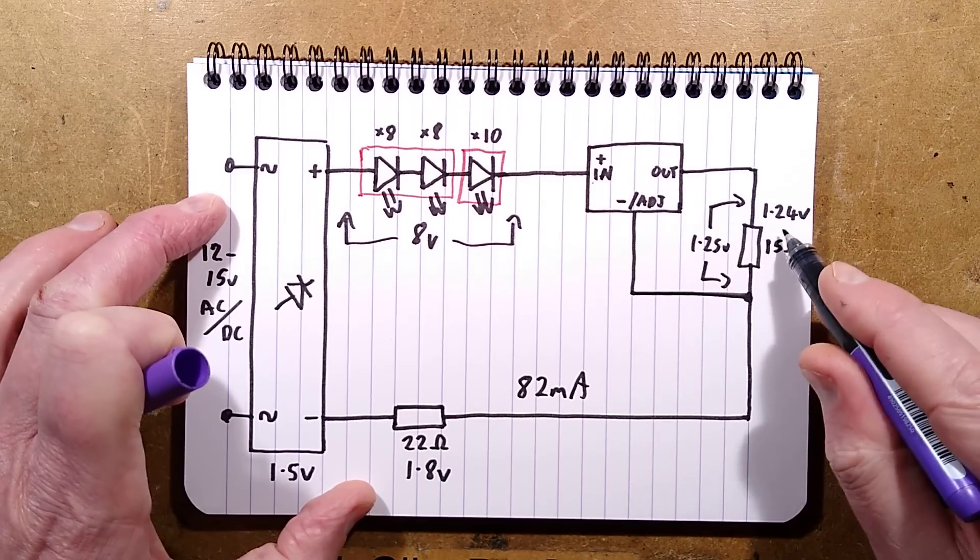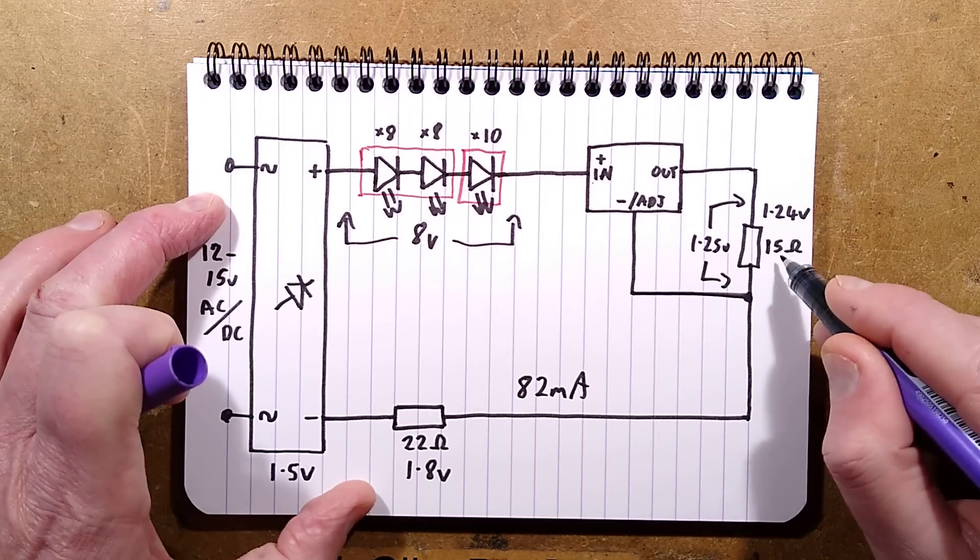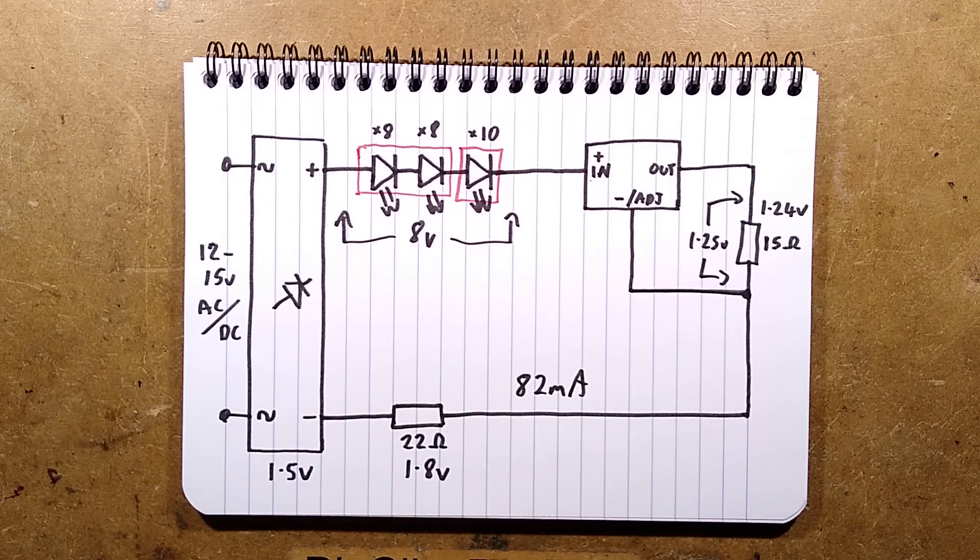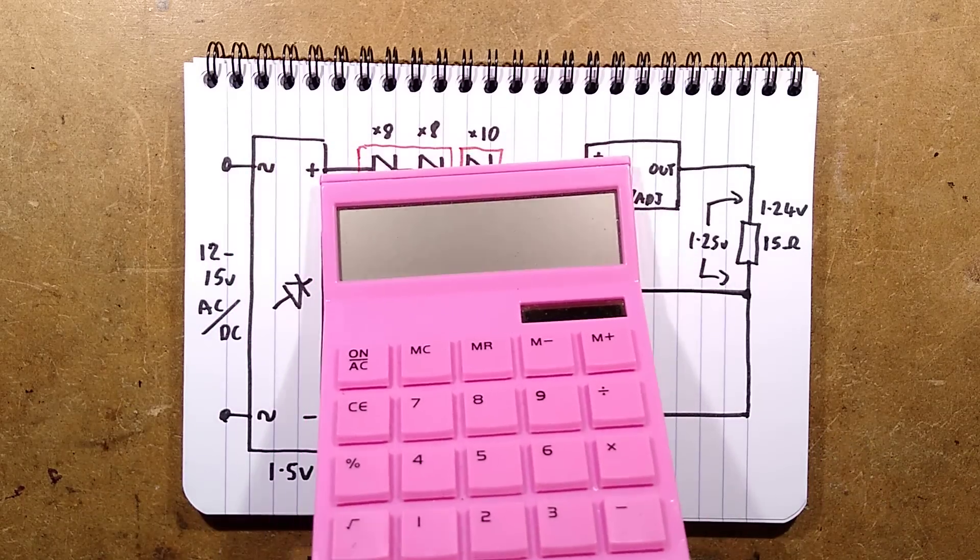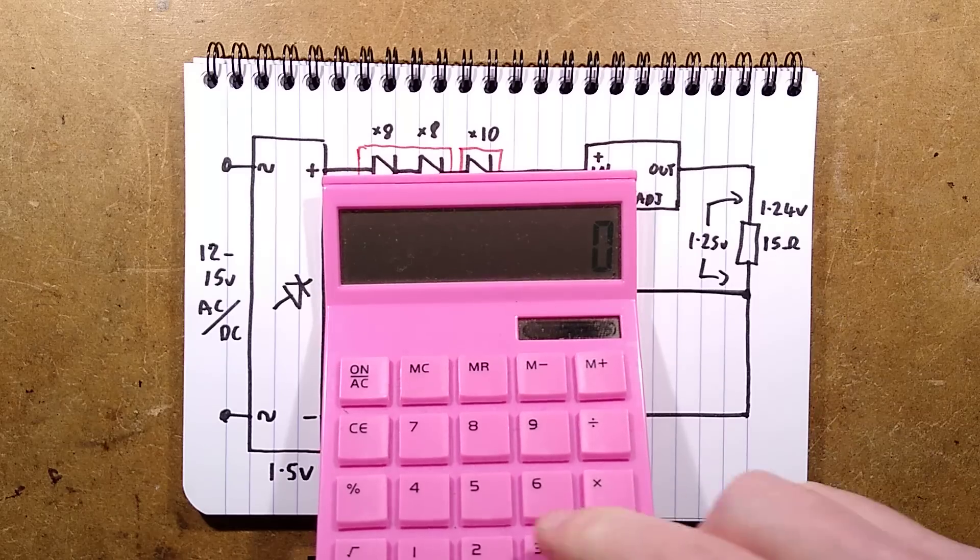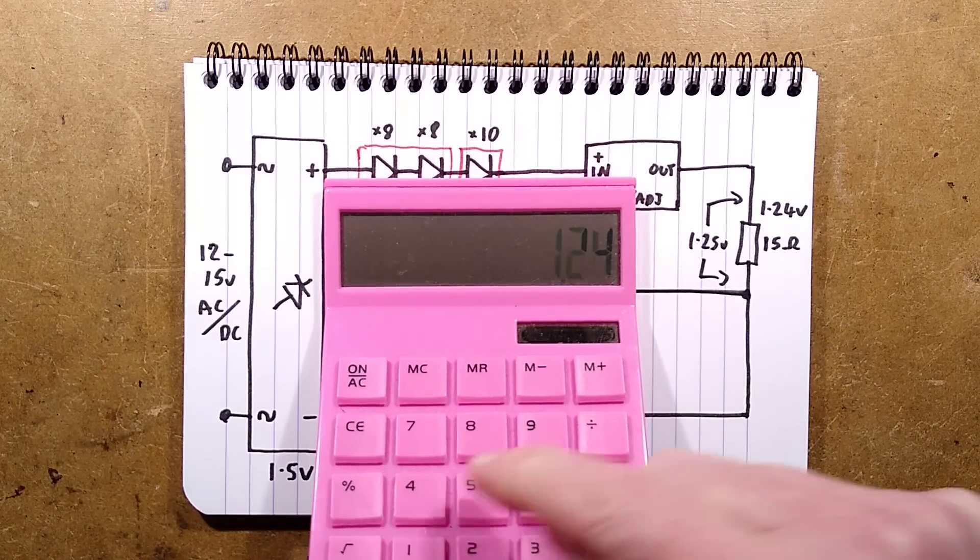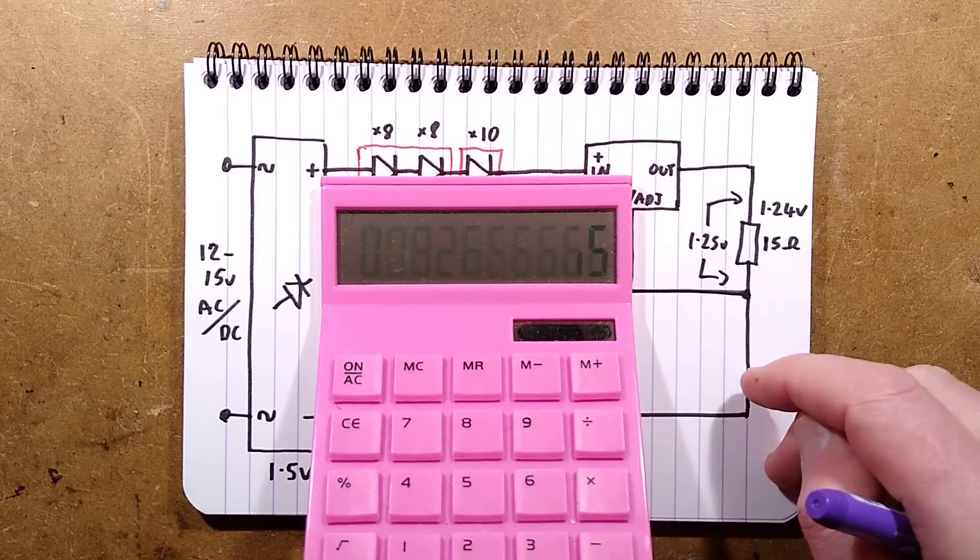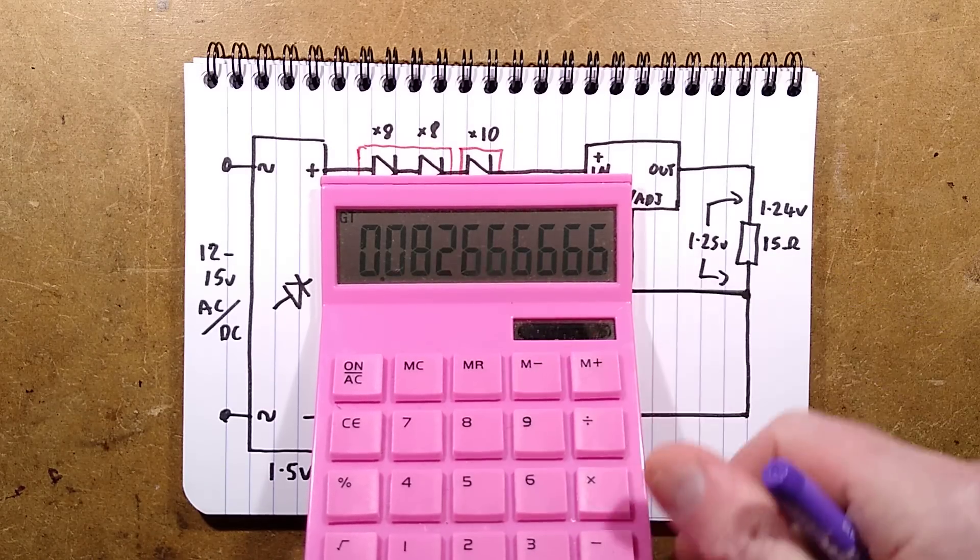In this case I measured 1.24 volts across that. To get that, let me bring in the calculator. I equals V, the voltage dropped 1.24 in this instance, divided by the 15 ohms, gives you your 82 milliamps.